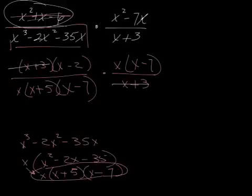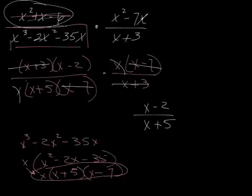And, let's see what we can cancel. That with that. That with that. That x with that x. And, I'm left with x minus 2 over x plus 5. That right there. And, that's it. So, that's lesson number 36.